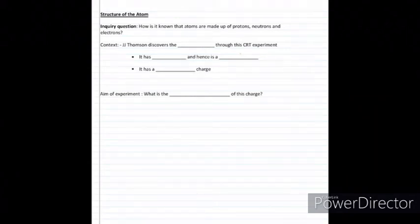So today we're looking at Millikan's oil drop experiment. Now this comes under the inquiry question, how is it known that atoms are made up of protons, neutrons and electrons? And for this experiment, we're looking at electrons in particular.